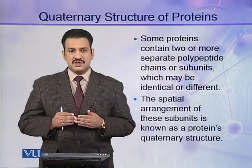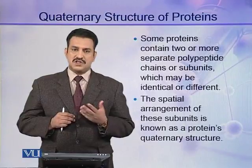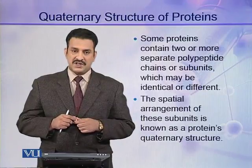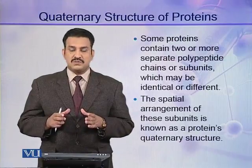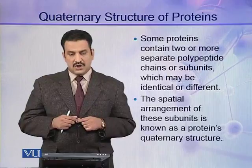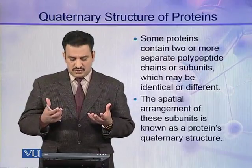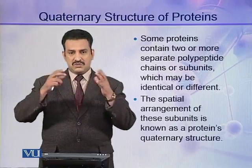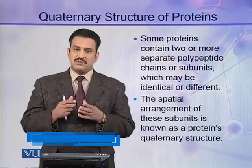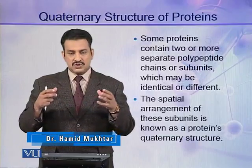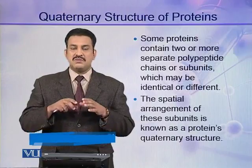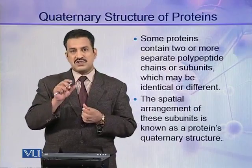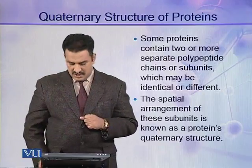Some bigger proteins may not only consist of a single polypeptide chain. They may contain two or more separate polypeptide chains, also called subunits. These subunits may be similar, identical, or different. The special arrangement of these subunits is known as the protein's quaternary structure. So in a protein molecule, there may be more than one polypeptide chain associated with each other, apparently making a single protein molecule.